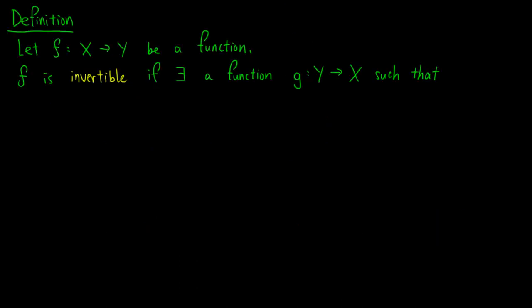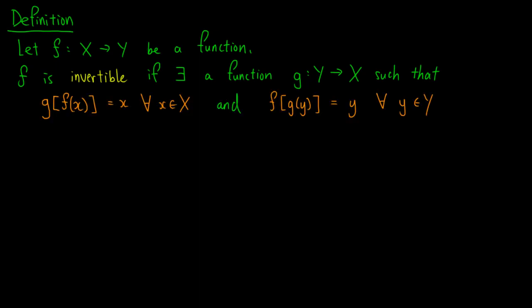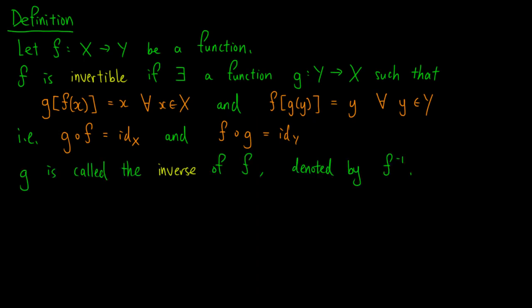Let f from X to Y be a function. We say that f is invertible if there exists a function g from Y to X such that g of f of x equals x for all elements x in X, and f of g of y equals y for all elements y in Y. In other words, g ∘ f is the identity function on X and f ∘ g is the identity function on Y. In this case, g is called the inverse of f, denoted f superscript negative 1.